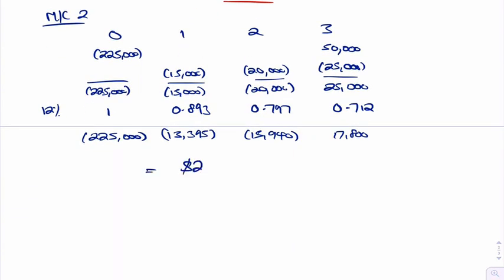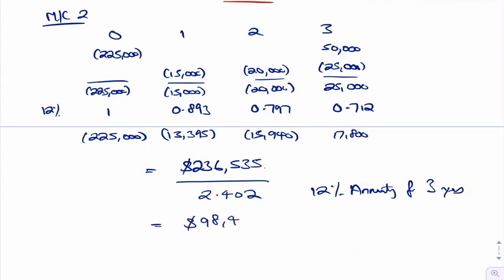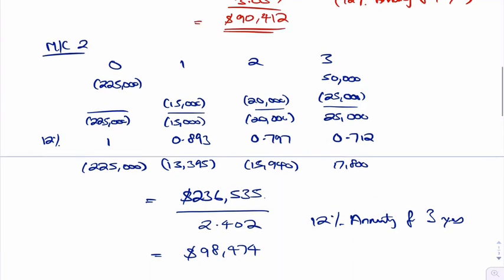You'd add all of those across and you would get to the grand old sum of 236,535. Spread it over the three years, but not divided by three, divided by 2.402. That is 12% annuity for three years. And if you do that, you get 98,474 per year equivalent annual cost, compared to 90,712.